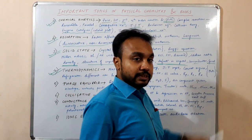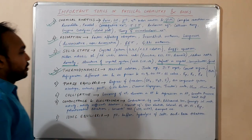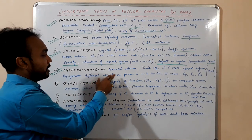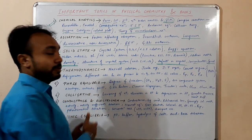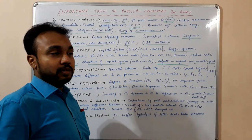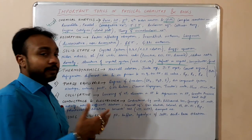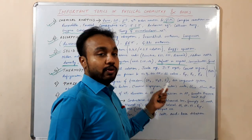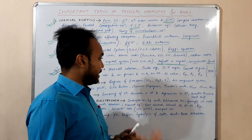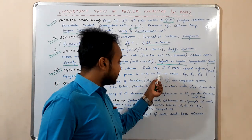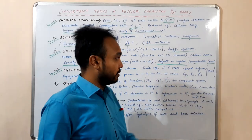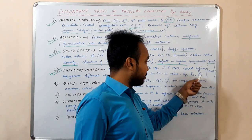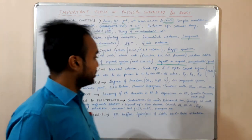Then Carnot engine and refrigerators with numerical problems. And different reversible and irreversible processes — reversible isothermal process, reversible adiabatic process — and the respective work done (W), heat absorbed or evolved (Q), delta U, delta S, and delta H values. Then the Kp, Kc, Kx and the relations among those.